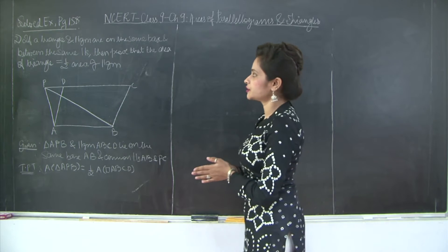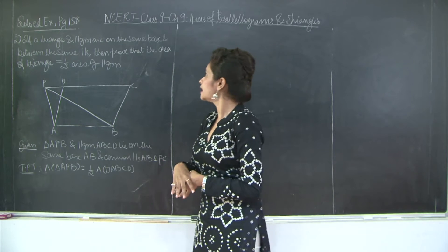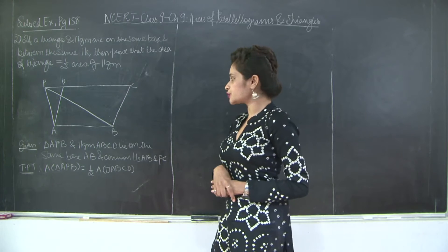Now we need to prove something new based on the given data, which is if a triangle and parallelogram are on the same base and between the same parallels, then you need to prove that the area of the triangle is half the area of the parallelogram.